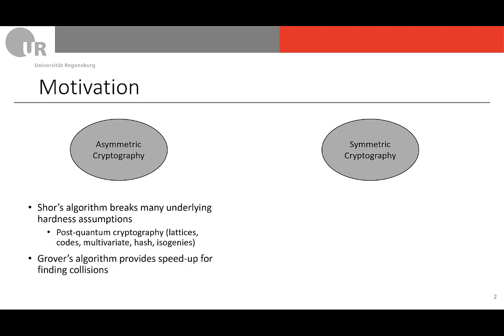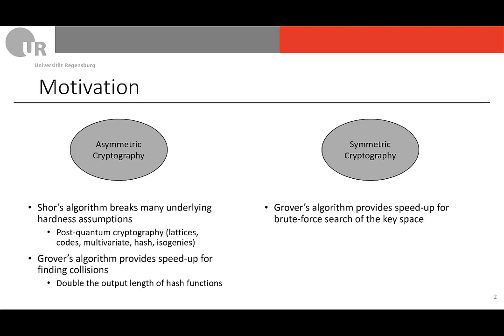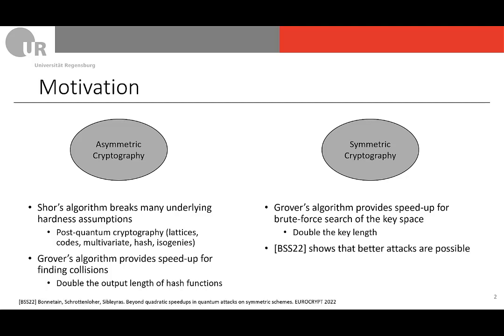We also have Grover's algorithm, which provides a speedup for finding collisions, and here we usually double the output lengths of hash functions to cope with that. For symmetric cryptography, we don't have these underlying hardness assumptions, so we cannot apply Shor's algorithm. But we can use Grover's algorithm to get a speedup for brute-forcing the key space. The usual way to deal with that is to double the key lengths, but recently at this year's Eurocrypt, it was shown that actually better attacks are possible. So what we need for symmetric cryptography is to analyze security against quantum attackers, which also defines the scope of this work.